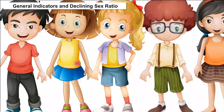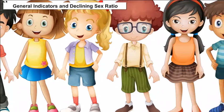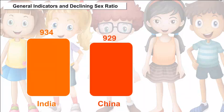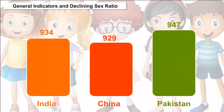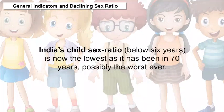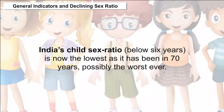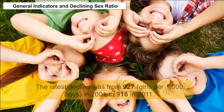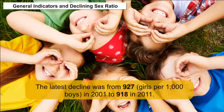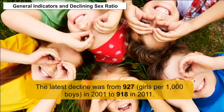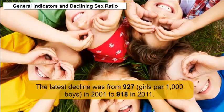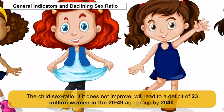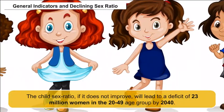General Indicators and Declining Sex Ratio: All three countries have a declining sex ratio — 9.34 in India, 9.29 in China, and 9.47 in Pakistan. India's child sex ratio, for children below 6 years, is now the lowest it has been in 70 years, possibly the worst ever. The latest decline was from 927 girls per 1,000 boys in 2001, to 918 in 2011. If the child sex ratio does not improve, it will lead to a deficit of 23 million women in the 20 to 49 age group by 2040.